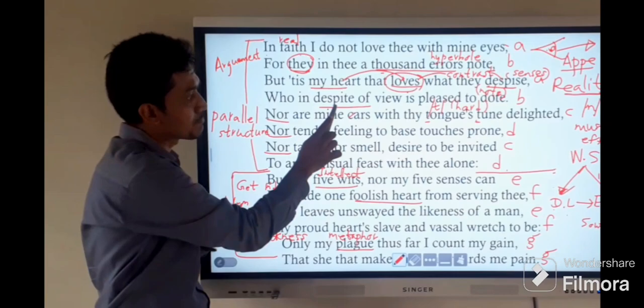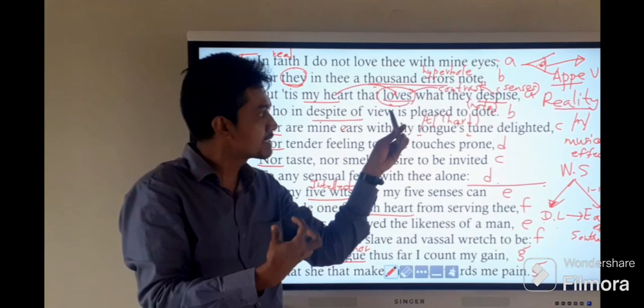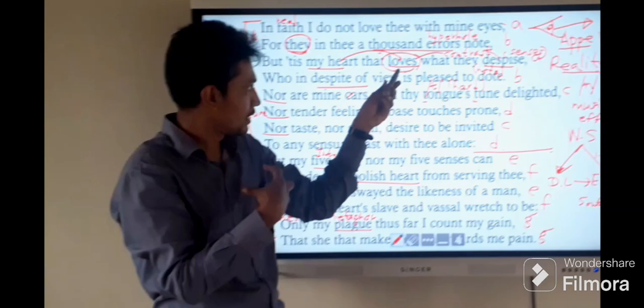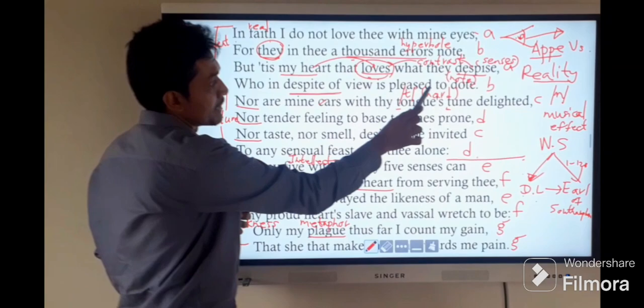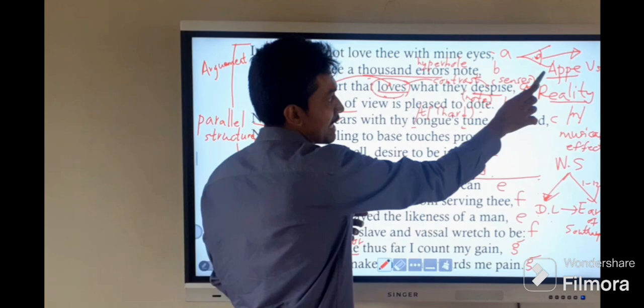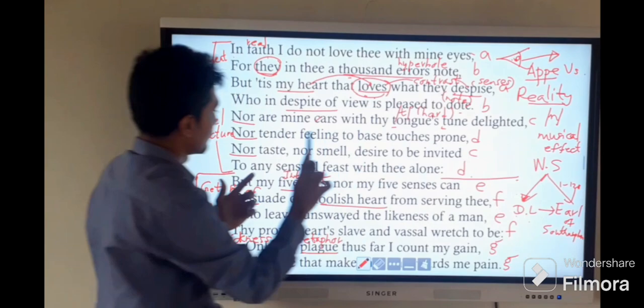Who in despite of view is pleased to dote. You can see the contrast. From the real senses, note these thousand errors. But from the heart, foolish heart, the speaker is enrolled with the lover. Despite of view, he is pleased to dote. There is a great contrast between the appearance and the reality.